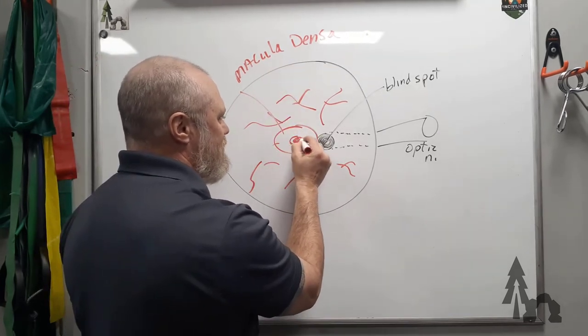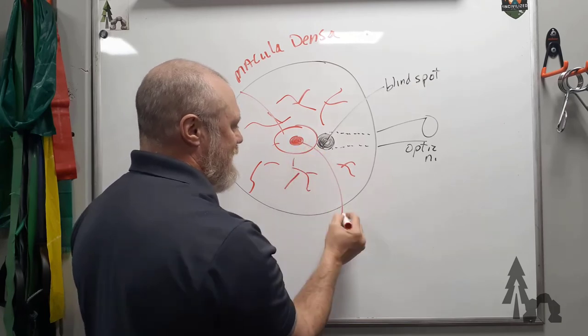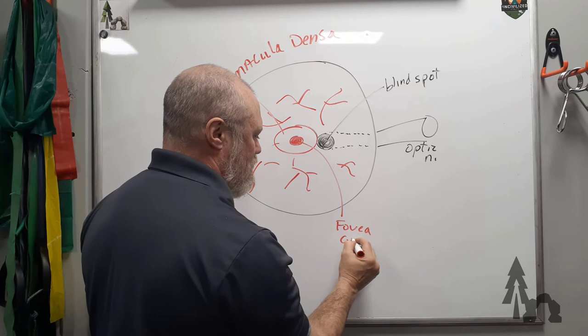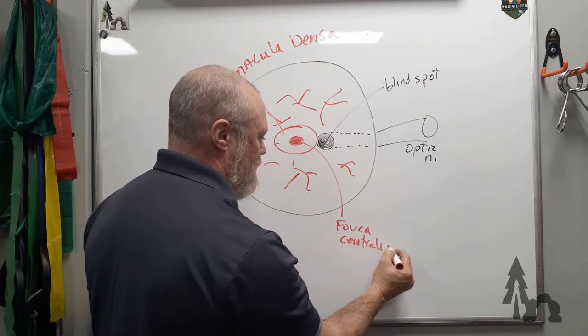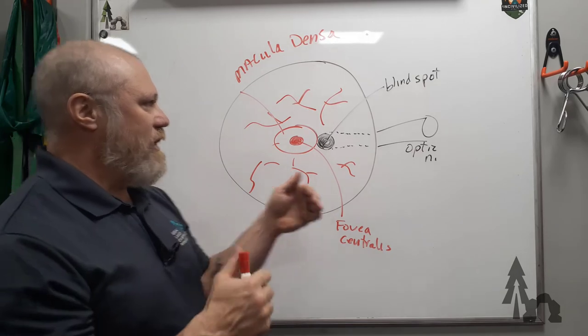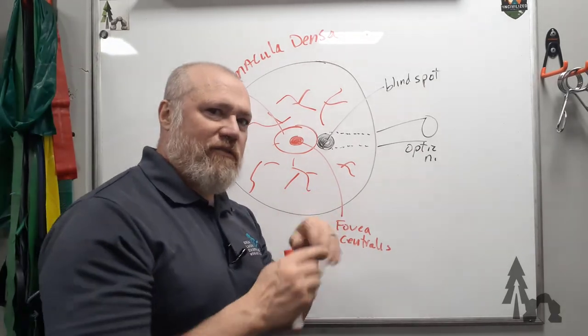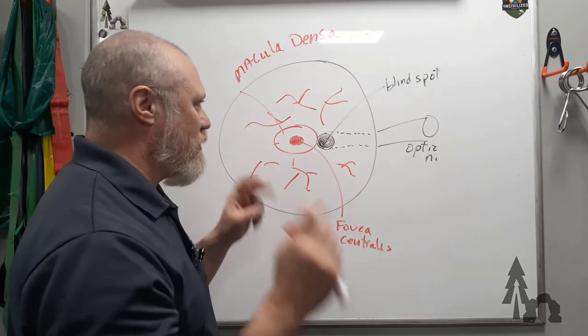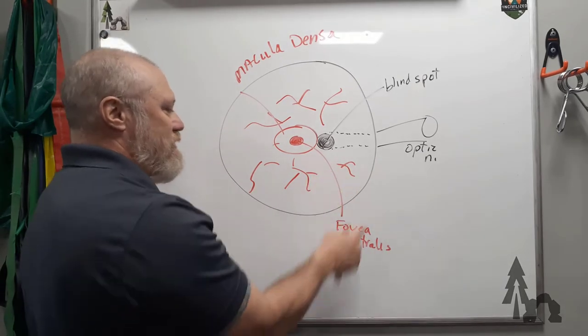That's the highest area, that's where your best vision is, and most of your extraocular muscles we talked about in another video are designed to move around to get the object of your attention focused through the pupil onto your fovea.